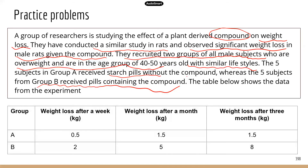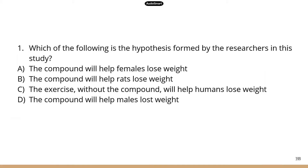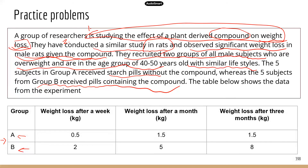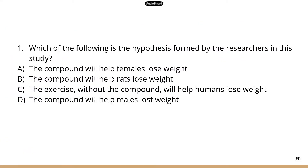The table shows the data from the experiment. Question one: which of the following is the hypothesis formed by the researchers? To figure out the hypothesis, go back to what they observed — they did a similar study in rats and observed weight loss in male rats given the compound. So the hypothesis would be that the compound will have a similar effect in humans. Let's figure out which answer choice is correct.